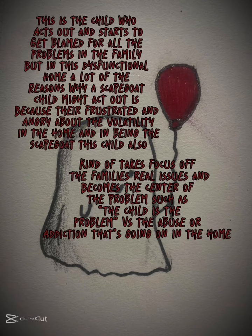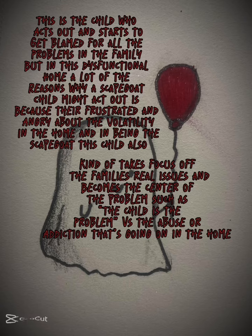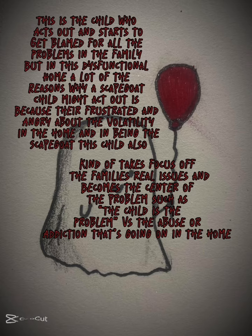The second role is the scapegoat. This is a child who acts out and starts to get blamed for all the problems in the family. But in this dysfunctional home, a lot of the reasons why a scapegoat child might act out is because they're frustrated and angry about the volatility in the home. In being the scapegoat, this child also kind of takes focus off of the family's real issues and becomes the center of the problem — such as the child being the problem versus the abuse or addiction going on within the home.